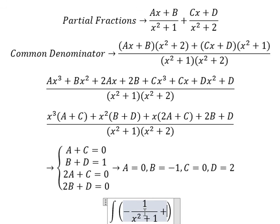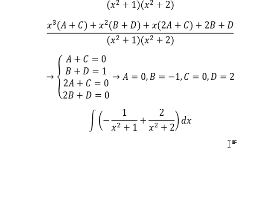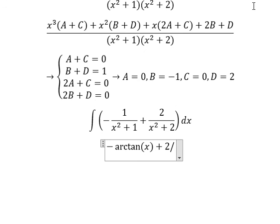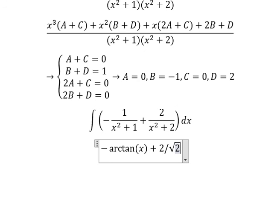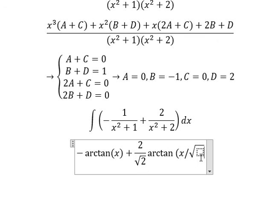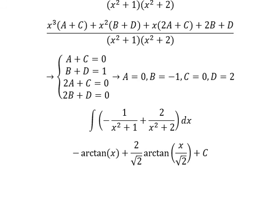Now for the final answer, number two: the integration gives us negative arctan(x) for the first term, and for the second term we have two over the square root of two times arctan, plus the constant C. This is the end — thank you for watching.